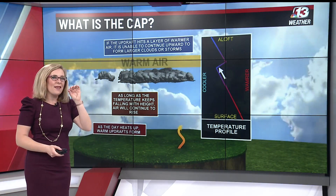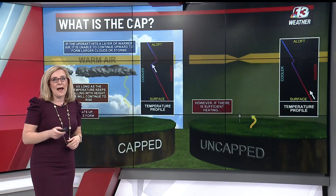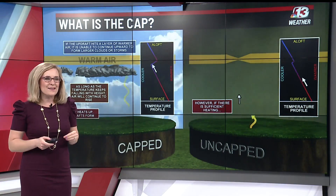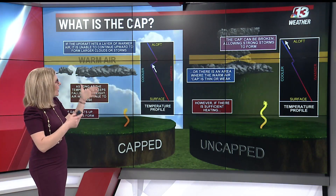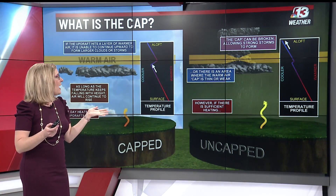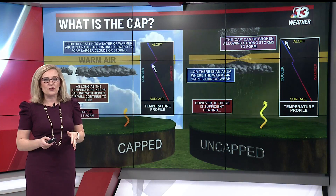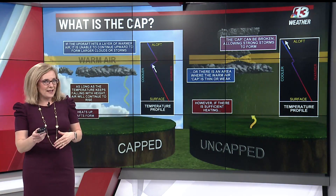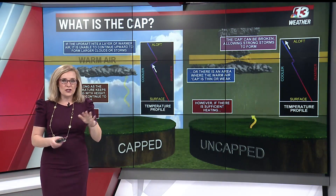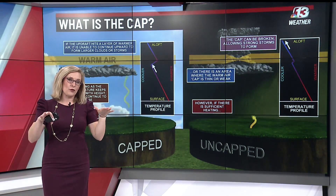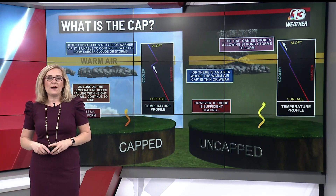Sometimes that cap can break. What do we mean by that? Well, there may be areas within the cap that are thinner, not as thick. So that rising air can get through the cap, and when that happens, those clouds start to tower up above and it allows those strong thunderstorms — possibly severe thunderstorms — to form. So if we have a cap in place in the upper layers of our atmosphere, we'll watch whether those storms may not make it through the cap to actually develop.